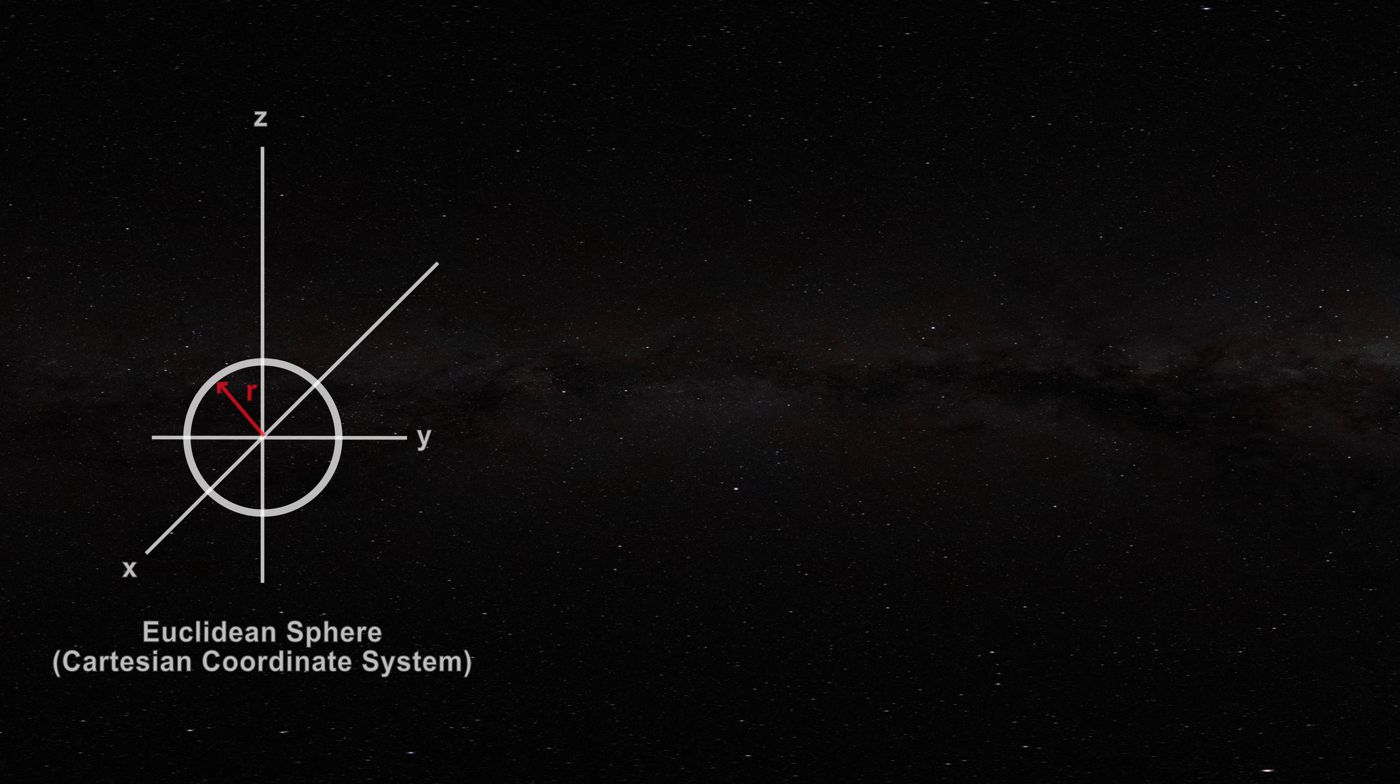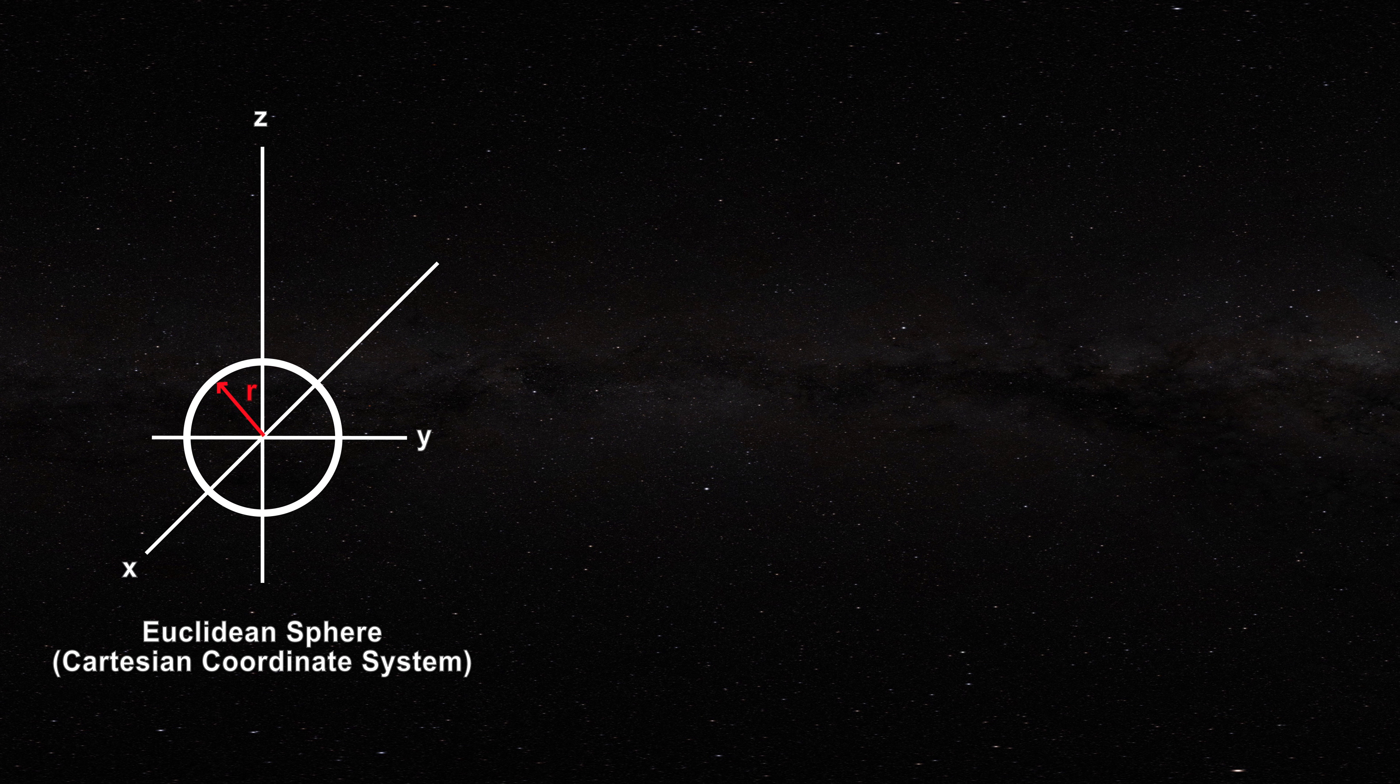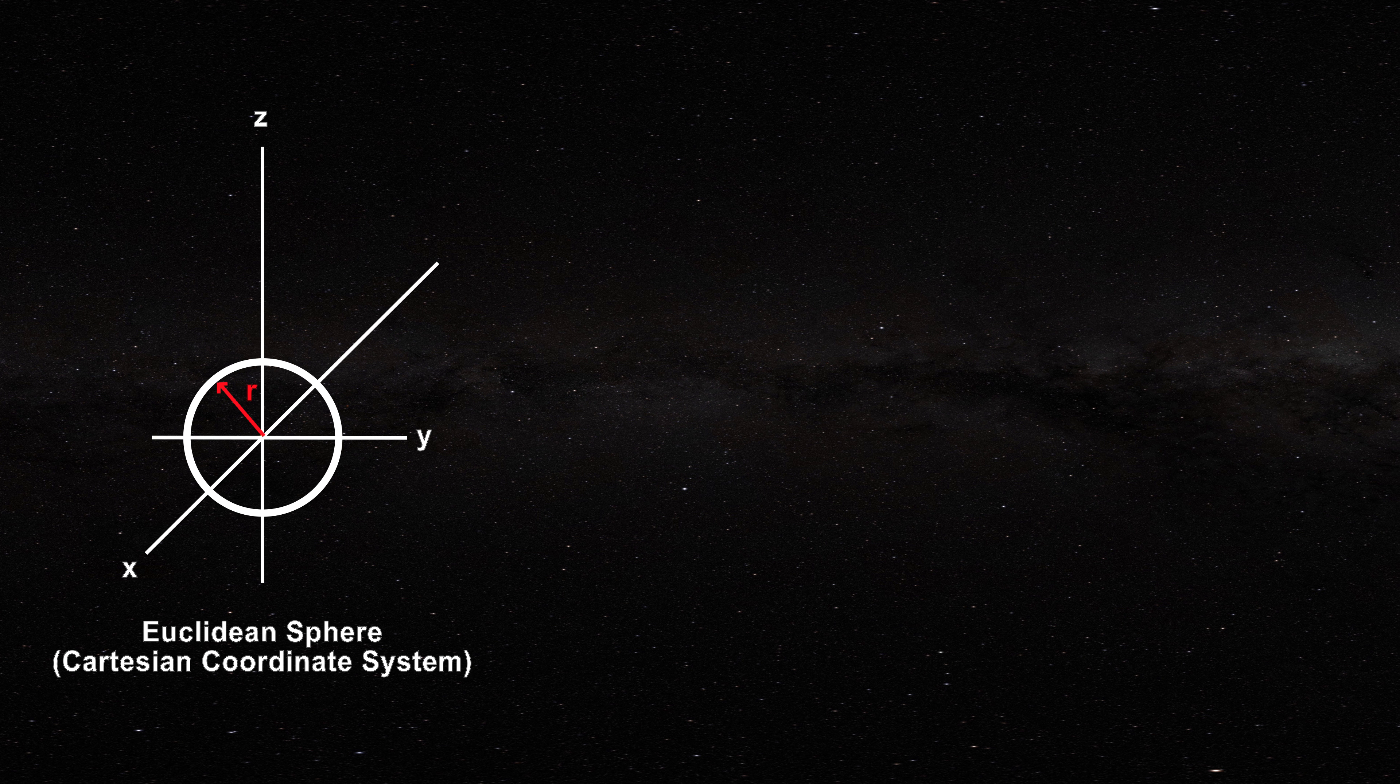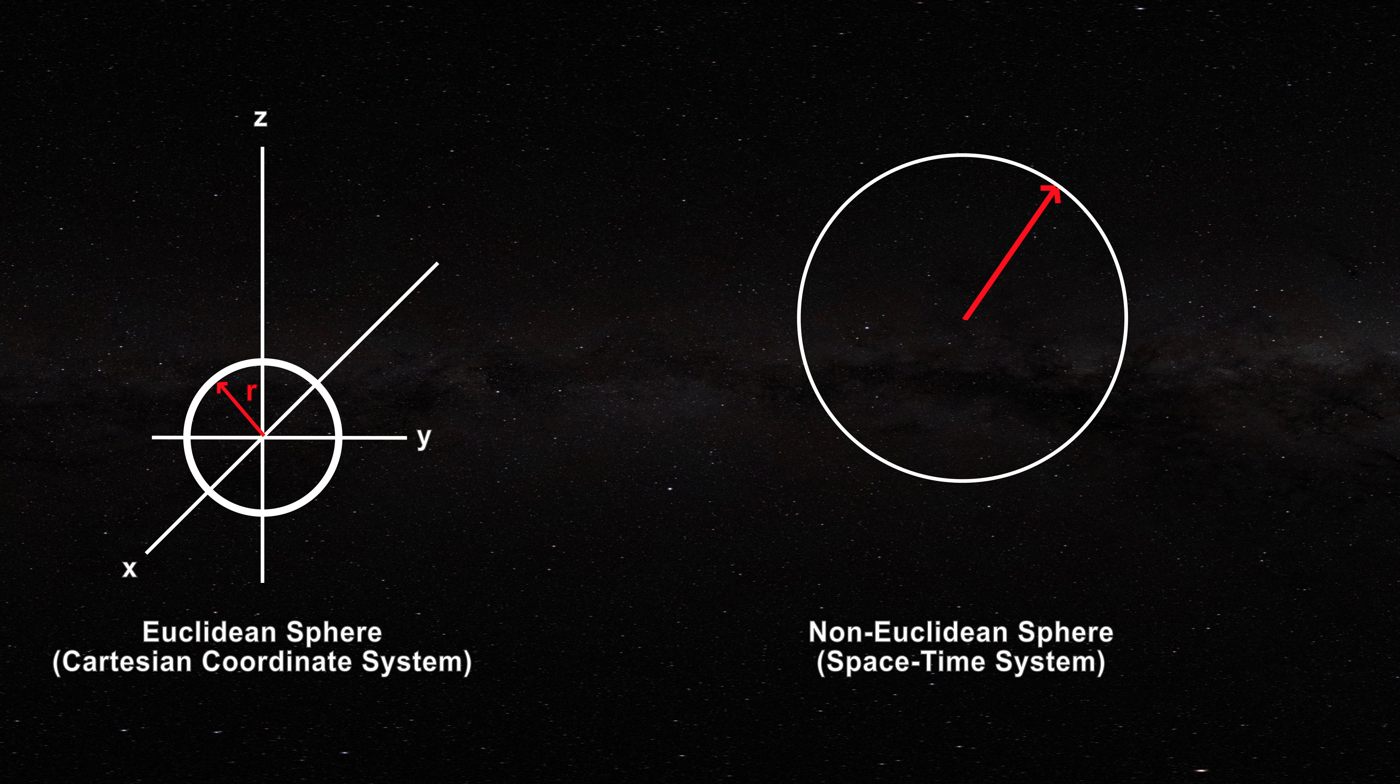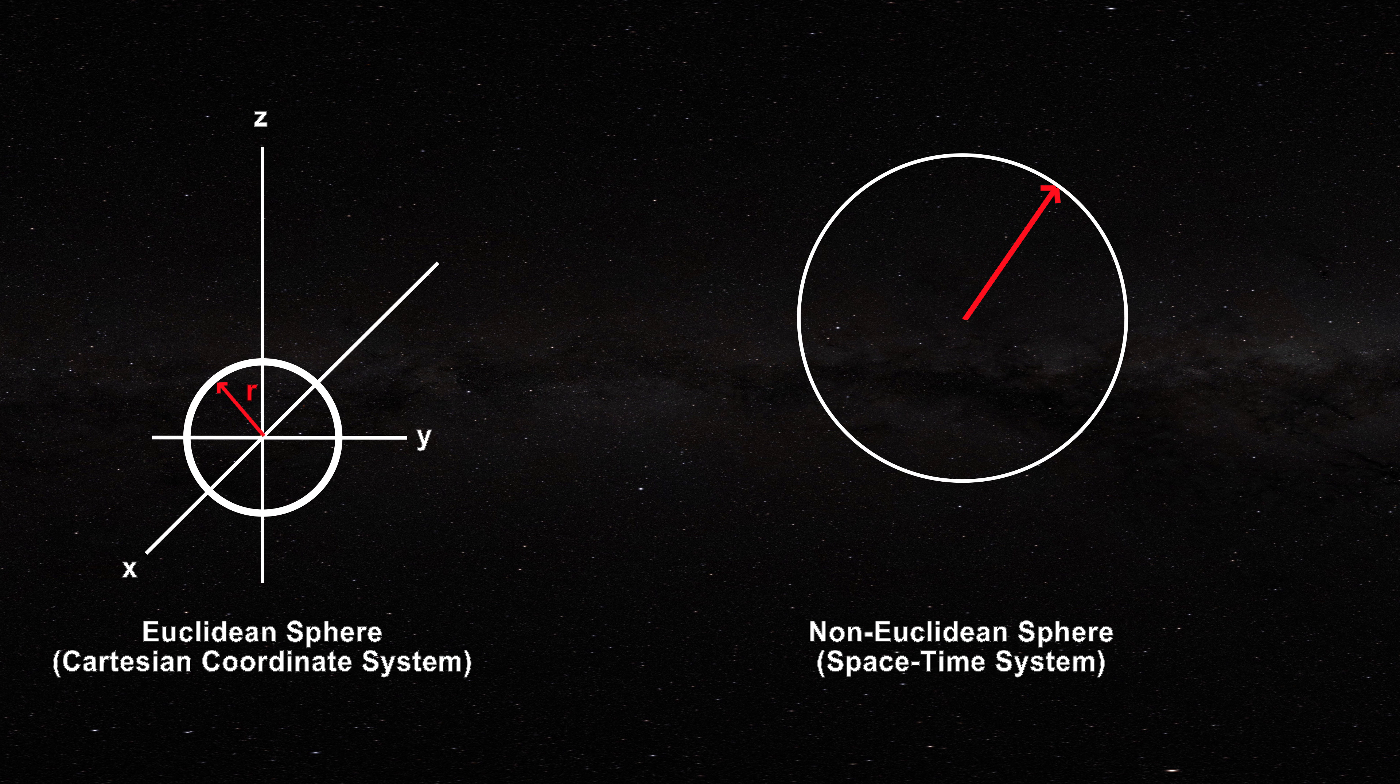Now, black hole mathematics begins with a Euclidean sphere of radius little r centered at the origin. This sphere is then generalized to a non-Euclidean sphere in space-time by means of the radius little r of the Euclidean sphere as in this figure.